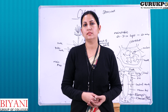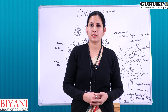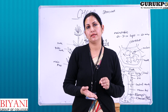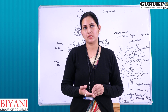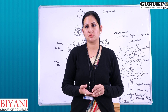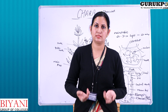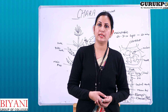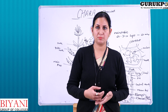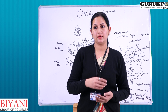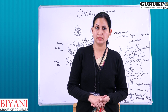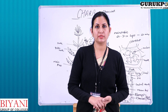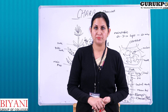In Chara, two kinds of reproduction are found: vegetative reproduction and sexual reproduction. Sexual reproduction is of the advanced oogamous type, with globule and nucule as the sex organs. We will discuss this in detail in the next video lecture.